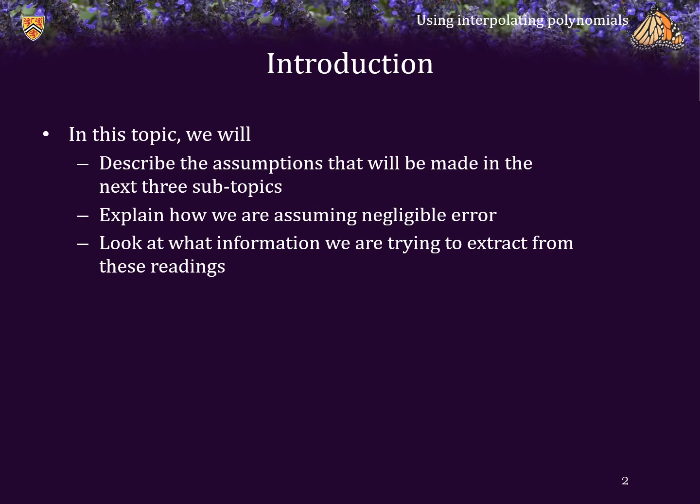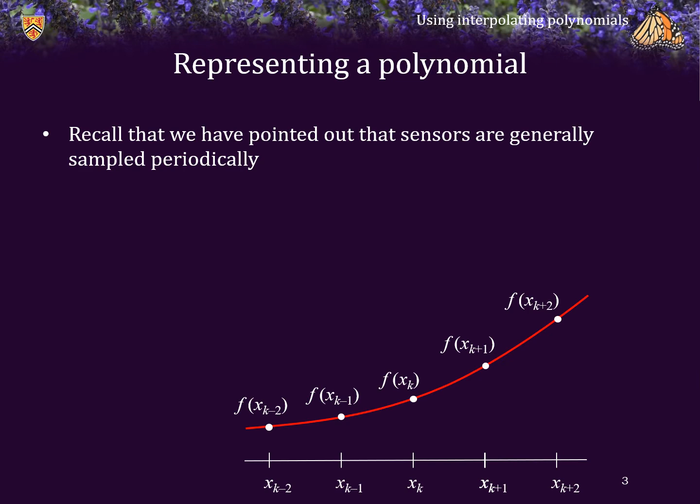We will look at the assumptions for the next three subtopics, where we are assuming that we are periodically reading a sensor and that there is essentially negligible error in those readings. We will then look at what type of information we can try to extract from having such readings. Sensors are generally sampled periodically.